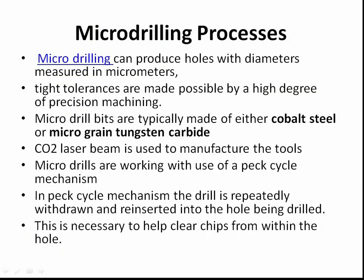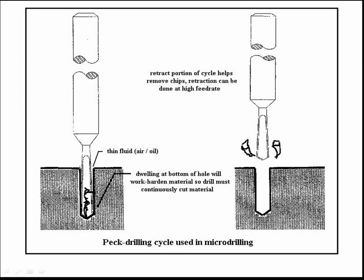Micro-drilling can produce holes with diameters measured in micrometers. Tight tolerances are made possible by a high degree of precision machining. Micro-drill bits are typically made of either cobalt steel or micro-grain tungsten carbide. CO2 laser beam is used to manufacture the tools. Micro-drills work using a peck-cycle mechanism, where the drill is repeatedly withdrawn and reinserted into the hole being drilled. This is necessary to help clear chips from within the hole. Even thin nano-fluids used as lubricants will not bring micro-chips from the drilled hole to outside.